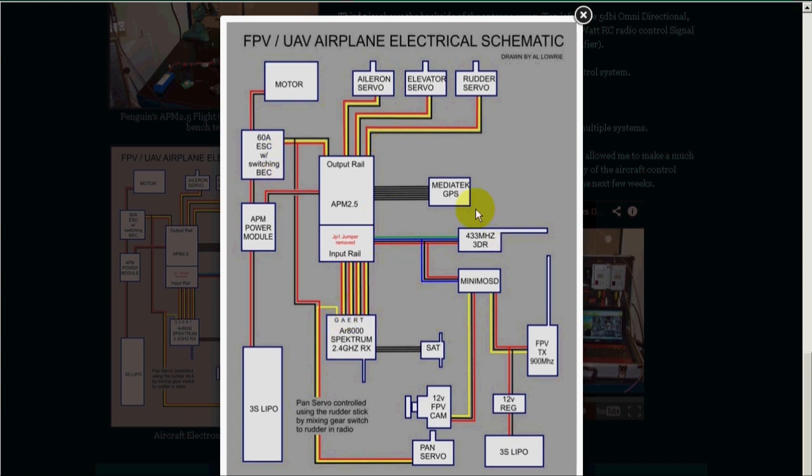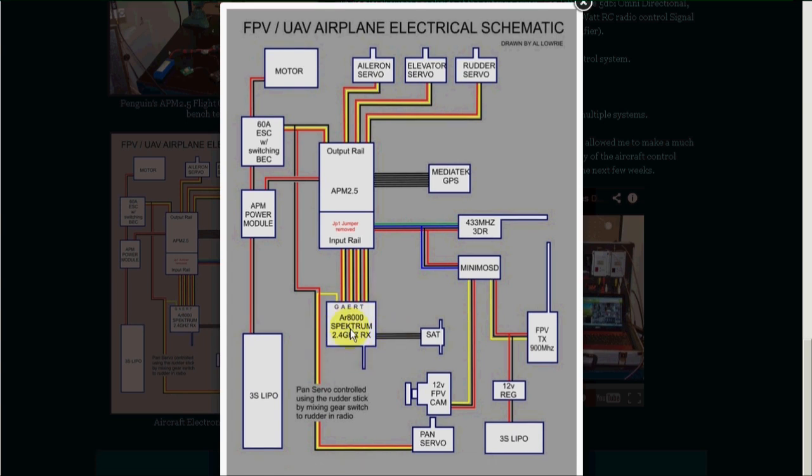So the four systems I'm going to be using are represented in this schematic, and the first one I'm going to be doing is the LRS system. Now he is using an AR8000 from Spectrum as the receiver and he's got also a satellite receiver. I'm going to be replacing this with the Easy UHF long range system. So let's get started on that.